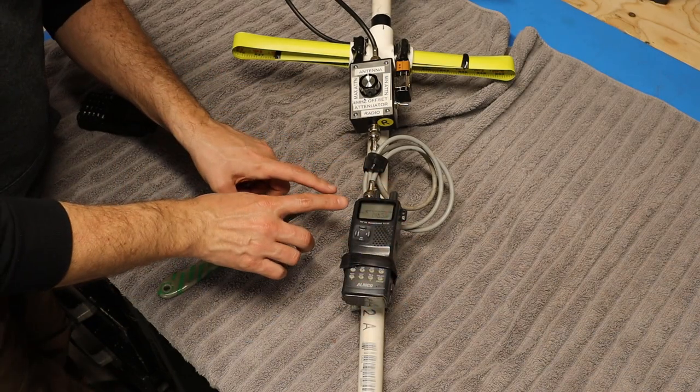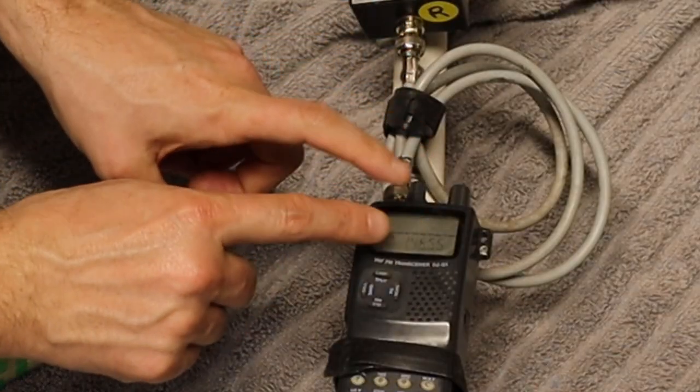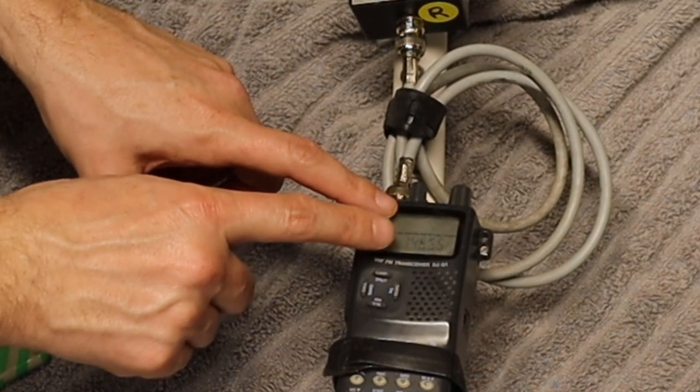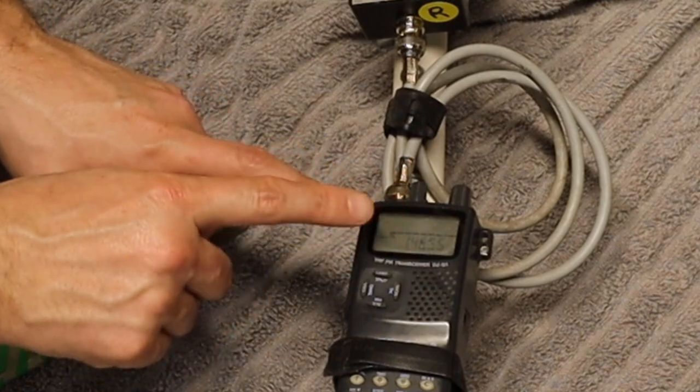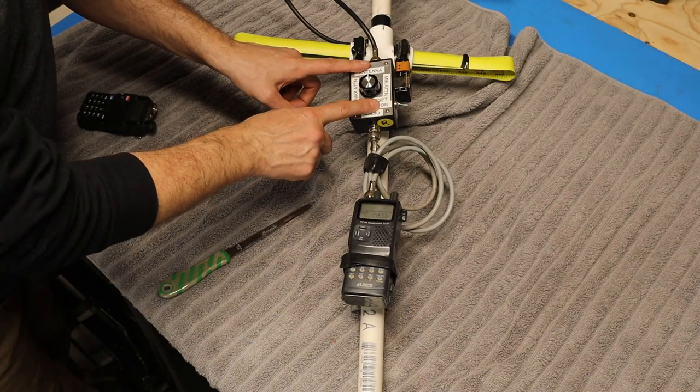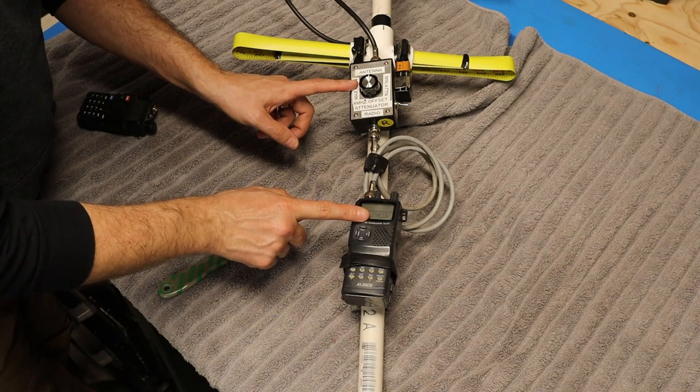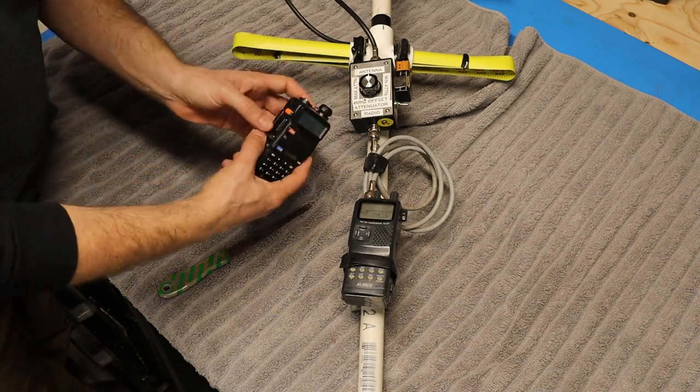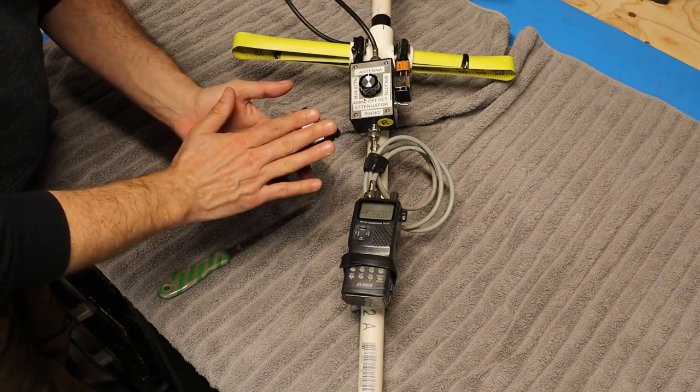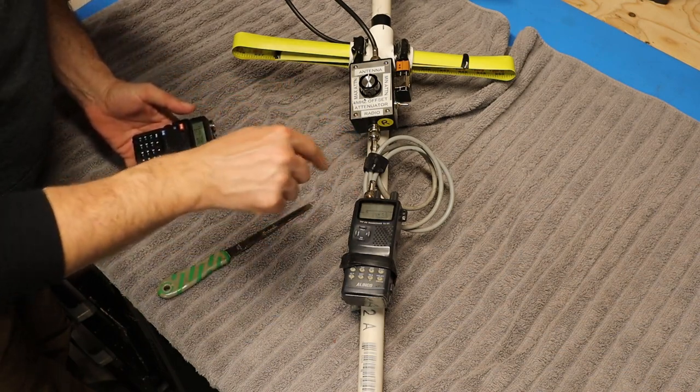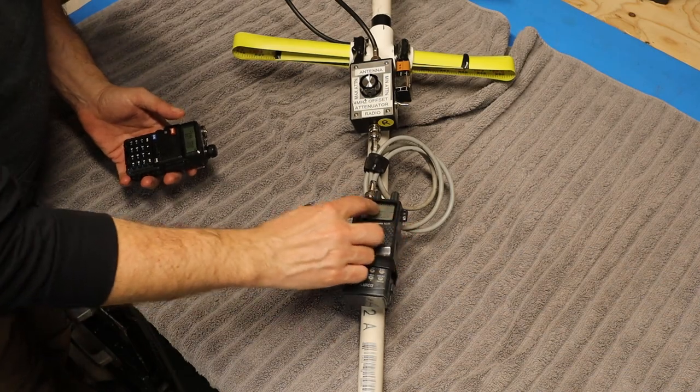Anyway, for the first test, just to establish a baseline, I've got the radio tuned to our frequency of interest, 146.550. And I've got the attenuator turned on, but because we're directly on the subject frequency, it's not going to do anything. Nevertheless, I'll go over on the other side of the cellar, I'll key up my Baofang, and you should be able to see on the Olinko a full-scale signal.